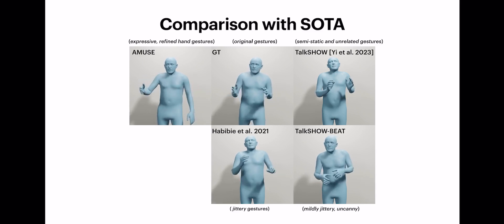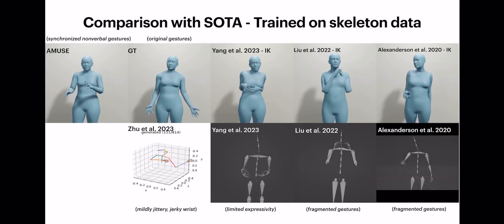We also compare Amuse generations with baseline methods trained on core skeleton data. Our method creates more appropriate emotional as well as synchronized gestures compared to these methods.